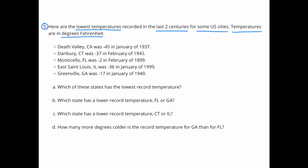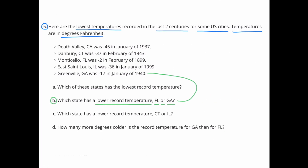Question 5: Here are the lowest temperatures recorded in the last two centuries for some U.S. cities, in degrees Fahrenheit. A: Which of these states has the lowest record temperature? California's Death Valley would have the lowest record temperature, as Death Valley's lowest temperature was negative 45, and negative 45 is further below zero than any of the other temperatures. B: Which state has a lower record temperature, Florida or Georgia? Georgia's lowest temperature is negative 17 degrees; Florida's lowest is negative 2 degrees. Negative 17 is further below zero than negative 2, so Georgia has the lower record temperature.